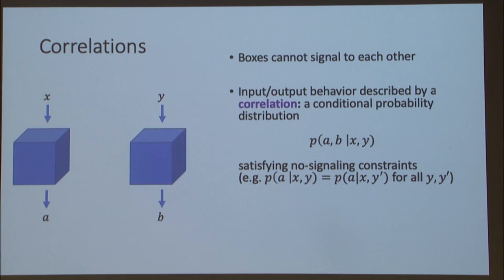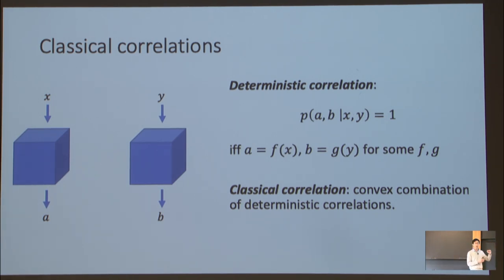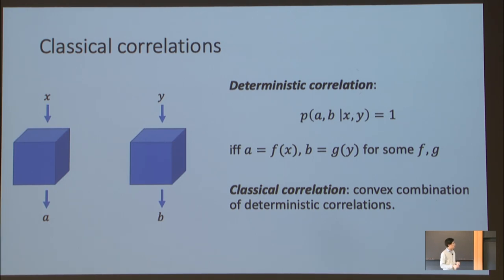We can ask what types of correlations are allowed in nature — and this depends on your model of physics. If you believe in classical physics, there's a class of correlations, the simplest being deterministic correlations where the outputs are just a function of the inputs received. Classical correlations are then defined as convex combinations of all deterministic ones. These are the types of correlations classical physics says can arise between two separated boxes.